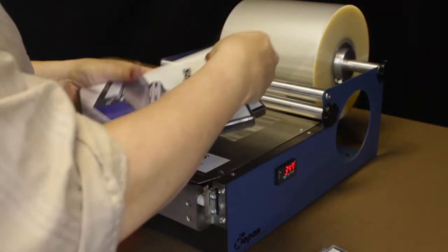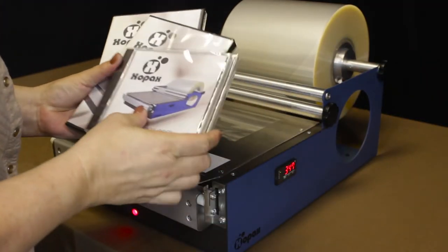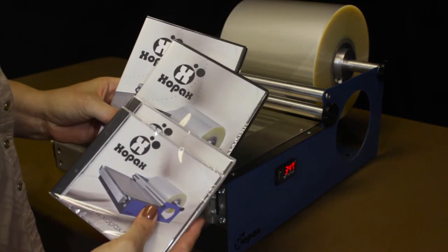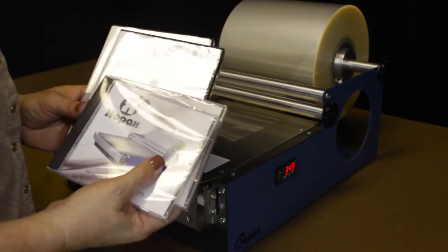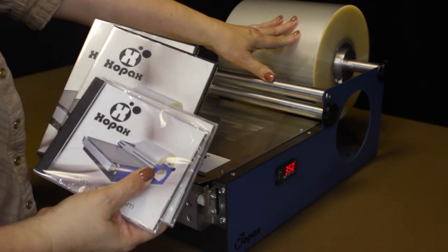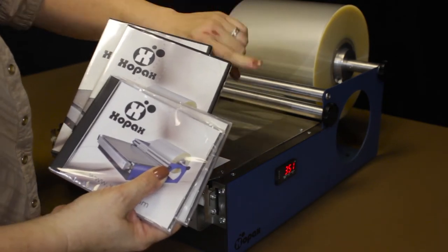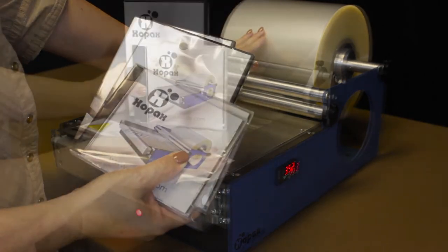And there you have it. So now I've demonstrated wrapping the jewel cases and the DVD cases just by switching out the roll of media film. Now we're going to move on to another option.